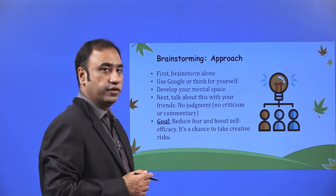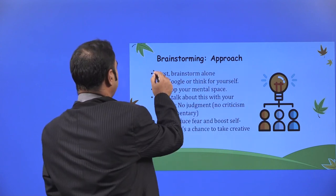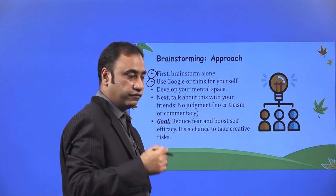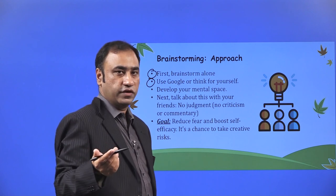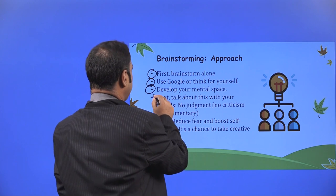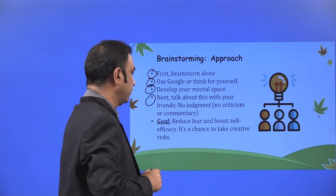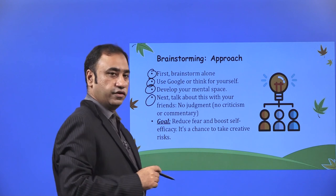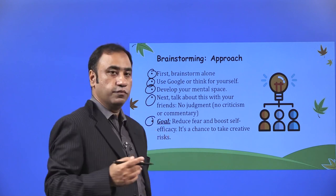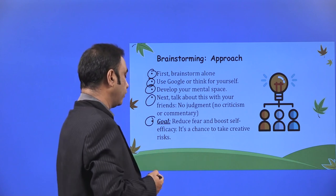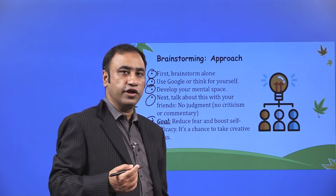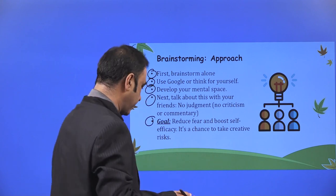Brainstorming approach. First, brainstorm alone. Use Google for brainstorming. Keep searching with different keywords. Use Google tools like Google Trends. Develop your mental space. Next, talk about this with your friends. No judgment, no criticism or commentary. Just talk with your friends. Goal: reduce fear and boost self-efficacy. It is a chance to take creative risk. This is how we take creative risk—evaluating different options and finally coming down to one.